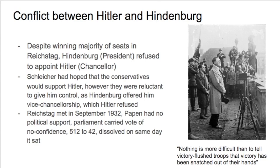Despite winning the majority of seats, President Hindenburg — who was ruling by presidential decree much of the time — refused to appoint Hitler as Chancellor. Hitler went out and announced: 'Nothing is more difficult than to tell victory-flushed troops that victory has been snatched out of our hands by Hindenburg.' Schleicher had hoped conservatives would support Hitler, however Hindenburg offered Hitler the vice-chancellorship, which Hitler refused. The Reichstag met in September 1932 — von Papen had no political support, a vote of no confidence was passed, and the Reichstag was dissolved on the same day it sat.